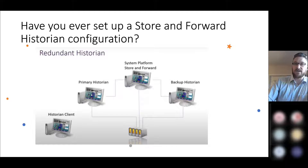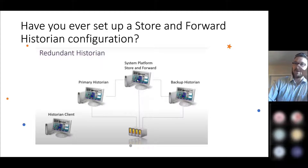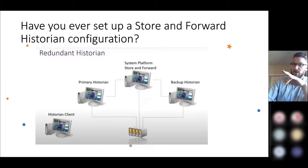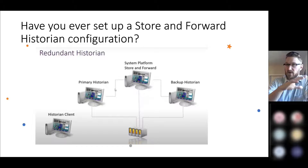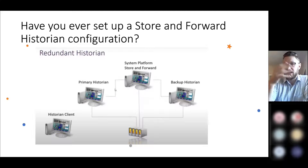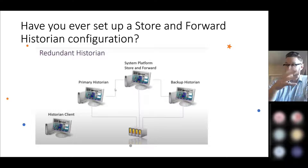So if you lose the connection between your primary Historian PC and your System Platform PC, that's okay — it's not as if you're going to permanently lose data. What will happen is your System Platform PC will begin to store that same data until the connection to your primary Historian PC is brought back online. This can be really useful if there are breaks in your connection — a cable gets unplugged, the network goes down temporarily — your System Platform PC will continue to store that data until the connection is renewed.